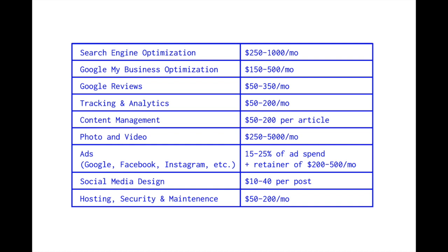You could easily get a great article written for fifty dollars and then charge two hundred per article — just like that you're pocketing an extra one fifty a month per client. The next thing is photo and video. I have a lot of friends that started in photography and videography and then learned web design so they could group those things together. A lot of my local business clients will tell me they don't have any good photos of their team. While I don't offer that service personally, it's a great way to tack on an extra charge of anywhere from two hundred to five thousand dollars.